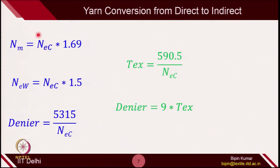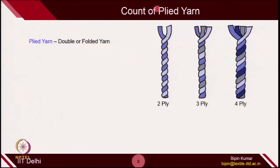You can follow some formulas to directly convert from direct to indirect. For example, metric count is connected with English count: NEC = metric count × 1.69. English worsted count is connected with English cotton count by a factor of 1.5. Denier is related with English count by 5315 ÷ NEC. Tex is related with English count by 590.5 ÷ NEC. And denier is related with tex by those formulas. These are useful so you can anytime switch from direct to indirect depending on the country's count system.